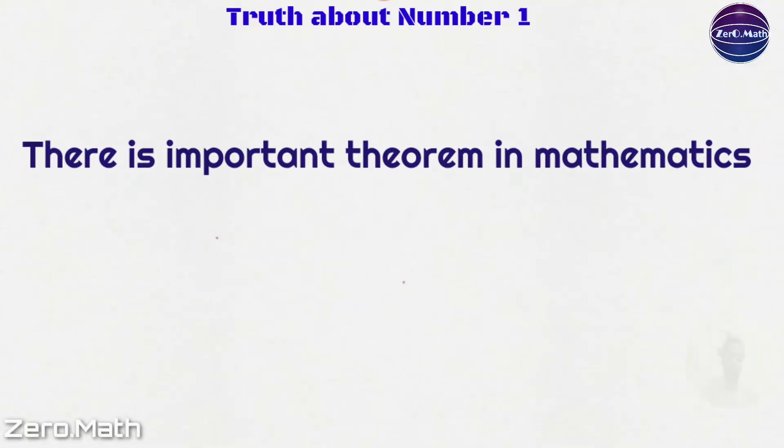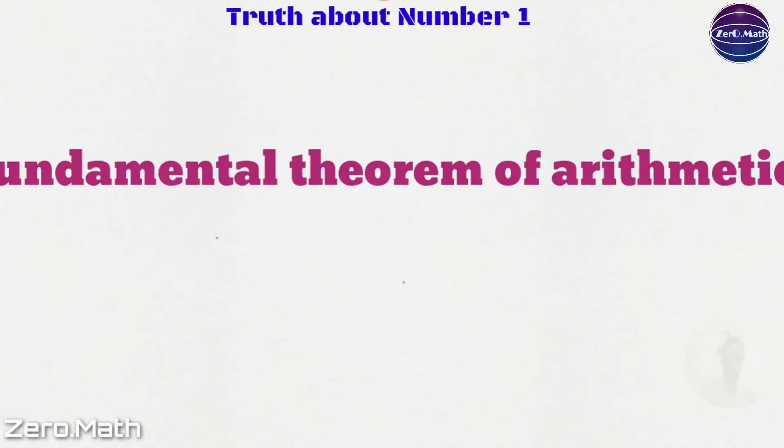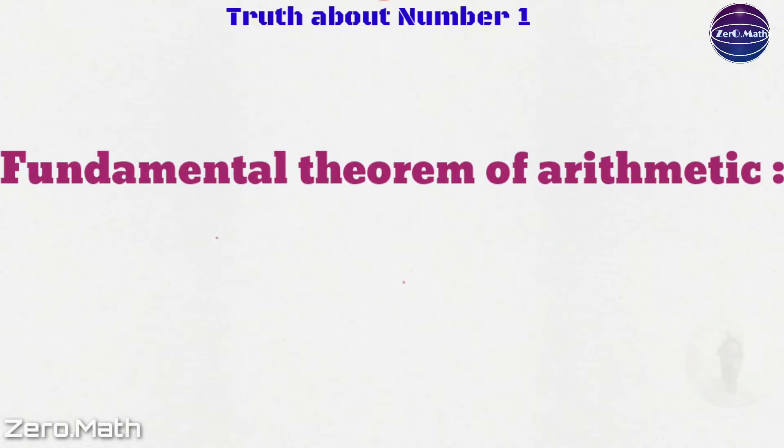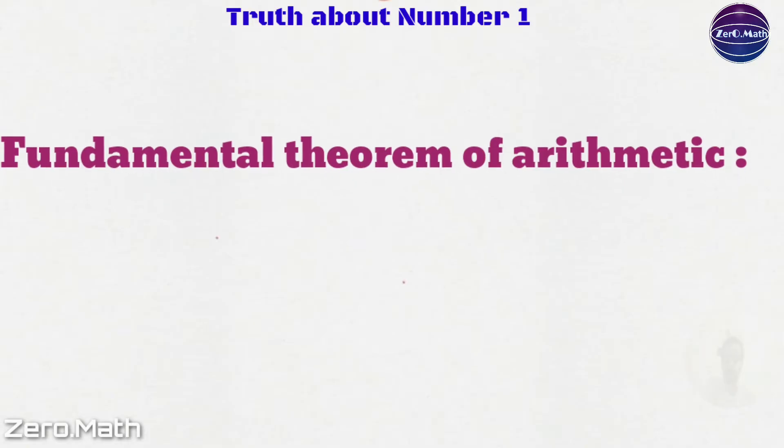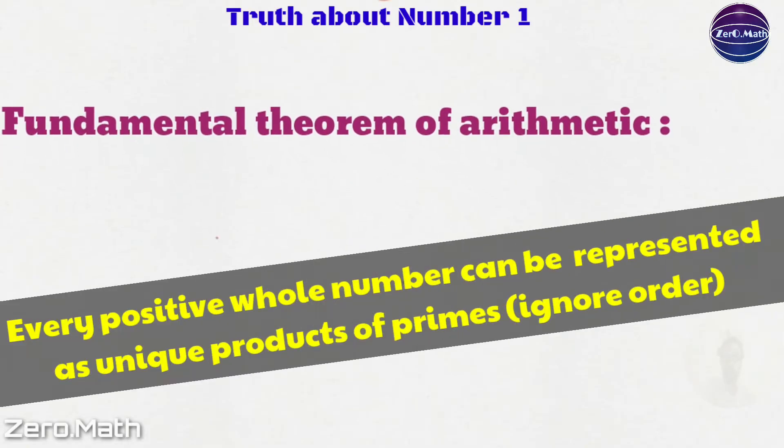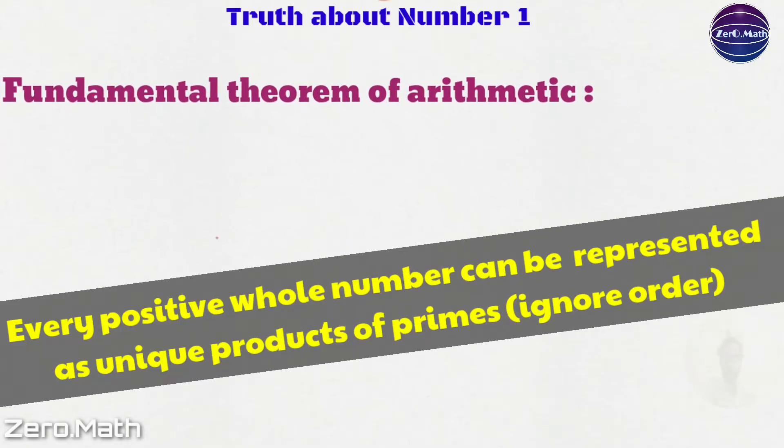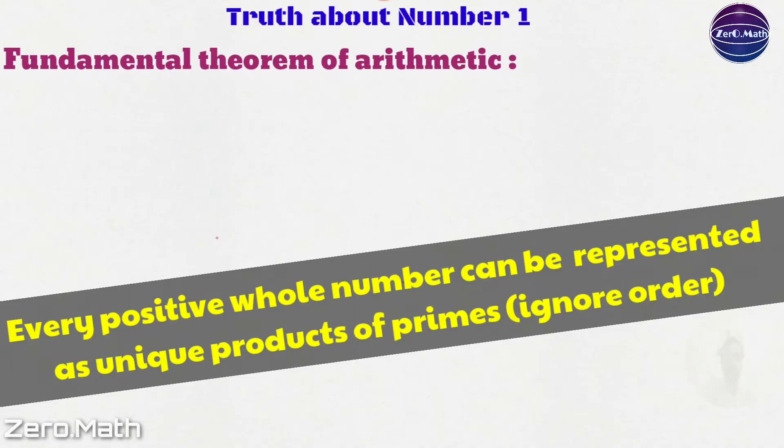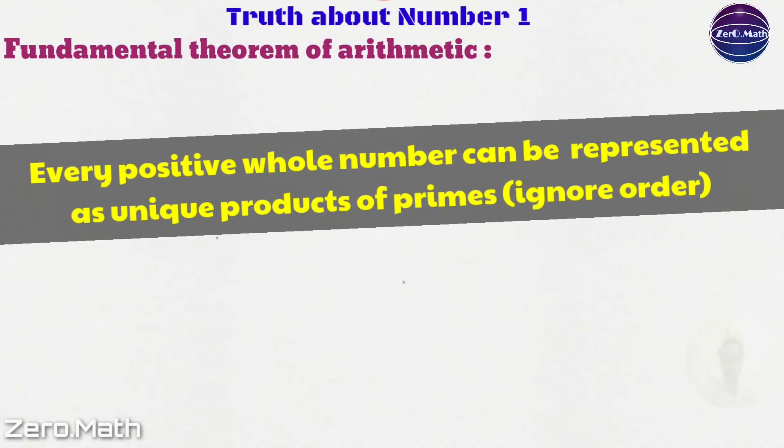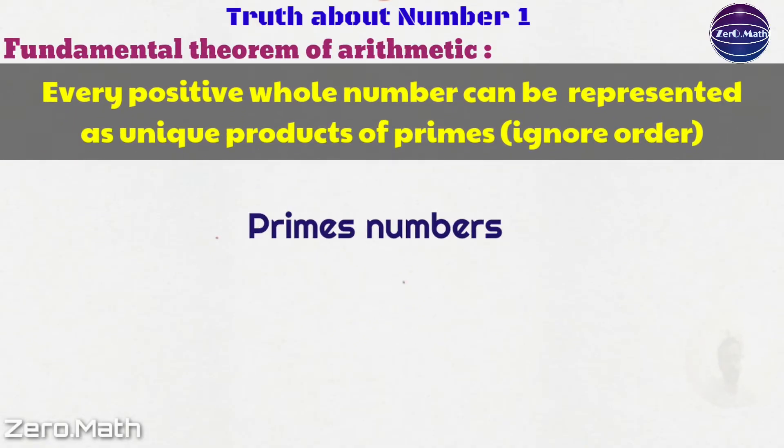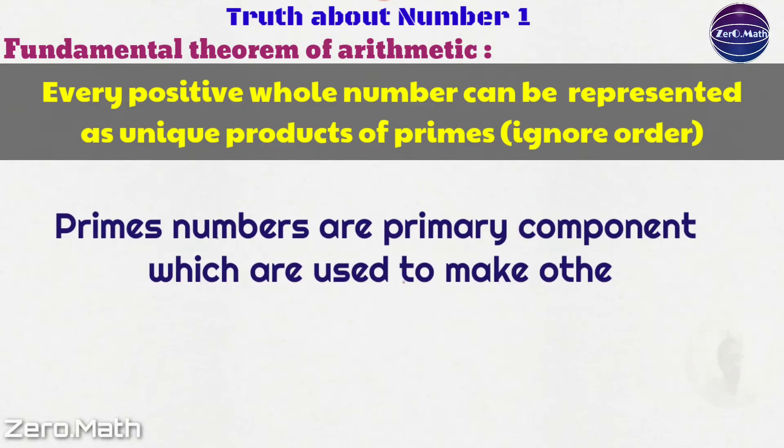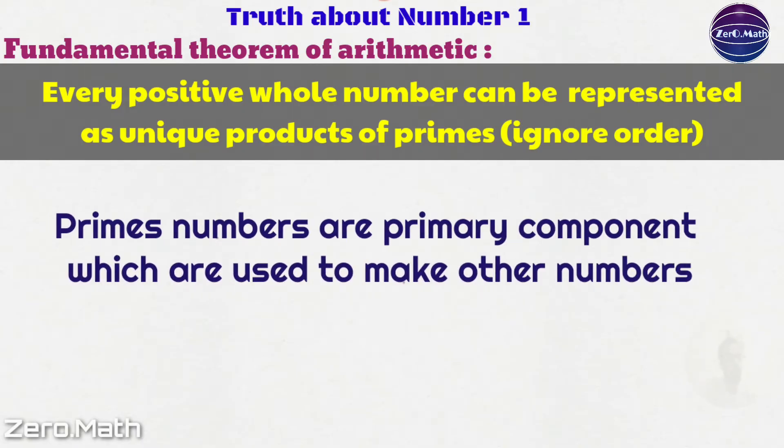There is a really important theorem in mathematics called the fundamental theorem of arithmetic. It states that every positive whole number can be represented as a unique product of primes. What it means is that prime numbers are the primary components which are used to make other numbers.